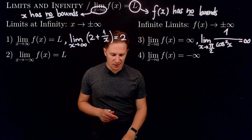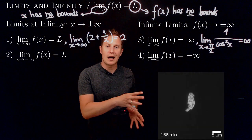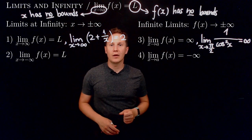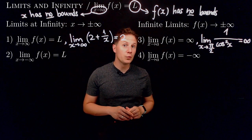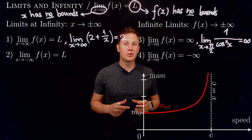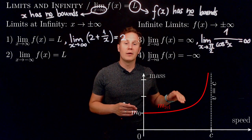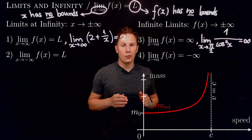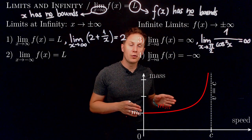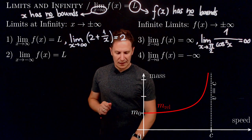For applications of infinite limits, consider a bacterial colony in a petri dish growing at an exponential rate — at a certain point you cannot count them anymore and may declare them infinite in number. A better example is relativistic mass in special relativity: as an object's speed relative to you approaches the speed of light, the relativistic mass you measure gets greater and greater, exceeding any upper bound. This is another example of an infinite limit.